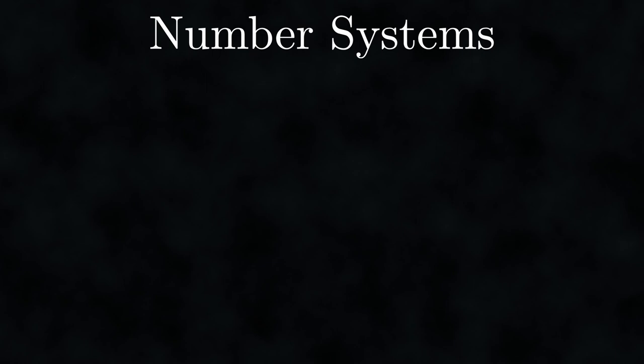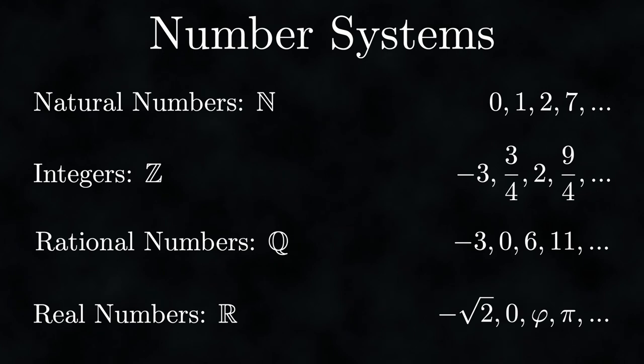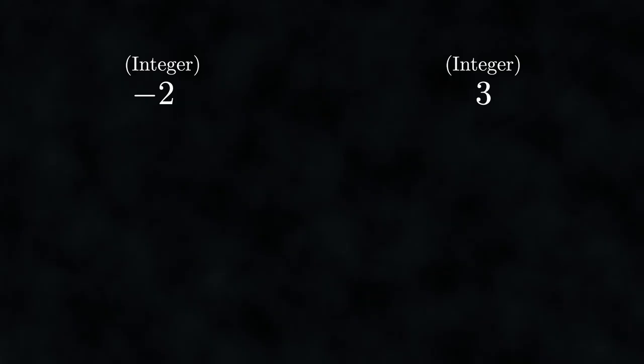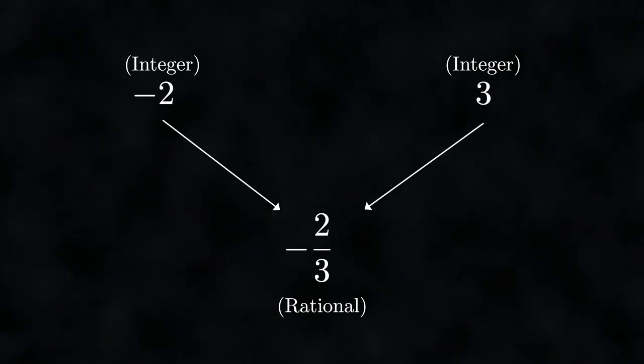Mathematicians enjoy using objects to describe concepts. In math, an object is a broad term — it could be anything like a point in space, a triangle, or even a whole polygonal model. We'll be using simple objects like numbers. You should know the fundamental number systems: natural numbers, integers, rational numbers, and real numbers, each more complex than the last. The game in math involves using simple objects to describe more complex ones. For instance, dividing minus two by three gives us minus two thirds — a more complex object.